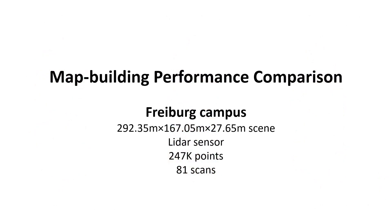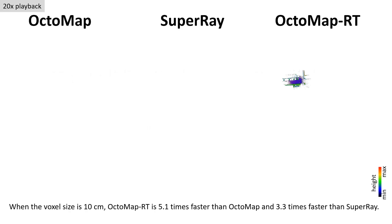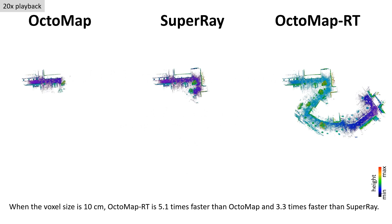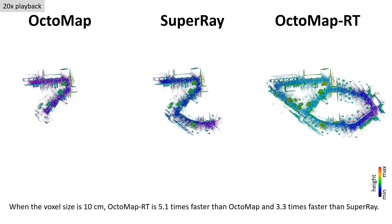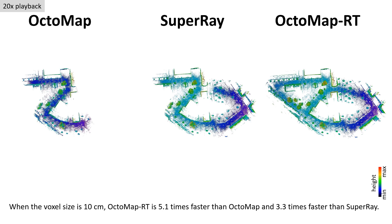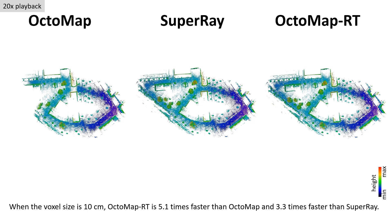The Freiburg campus is a large data set from LiDAR sensors. We compare map building performance. The size of the map is 292.35 meters by 167.05 meters by 27.65 meters, with 247,000 points per scan. The map is built with voxel sizes of 10 centimeters.